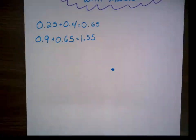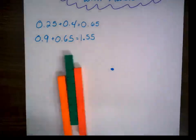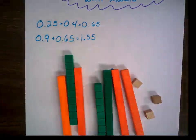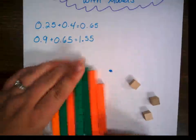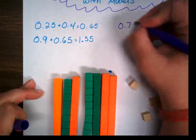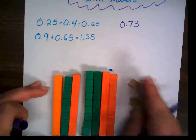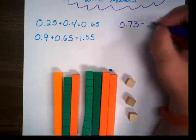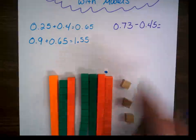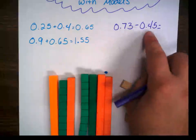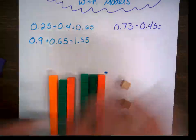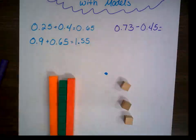Well, we can do kind of the same thing. So let's say I start off with 73 hundredths. I'm going to write that up here — 0.73. And let's say I want to subtract 0.45 — 45 hundredths. That means I'm going to take away four tenths and five hundredths. So I'm going to take away four tenths — one, two, three, four. That was easy.